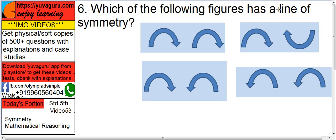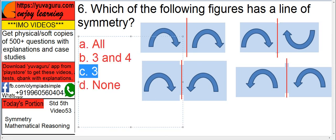Which of the following figures has a line of symmetry? It means if I draw a line in between, one side will be exactly the same as the other — a mirror image. I have drawn these lines. Which one will exactly fit over the other? Only the third one. The answer is C.